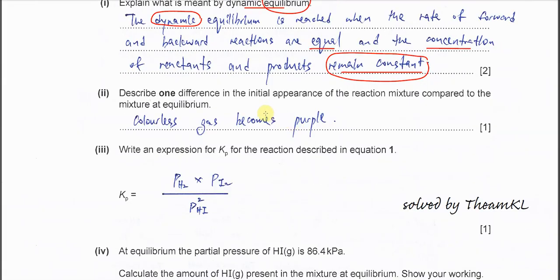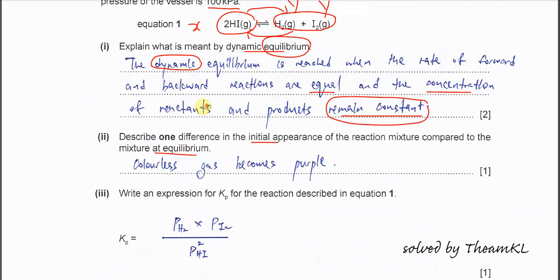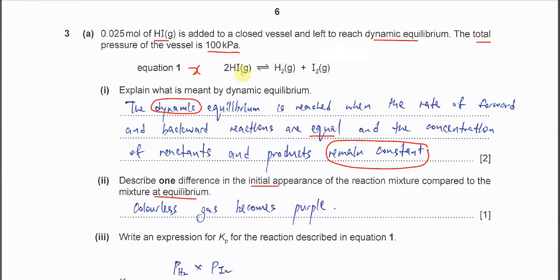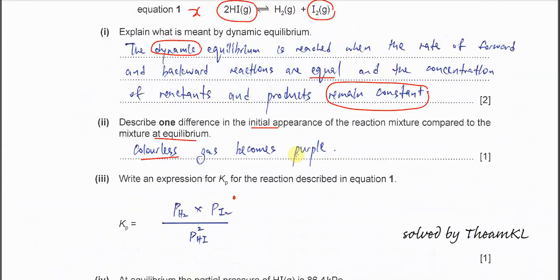Part two - describe one difference in the initial appearance of the reaction compared to the mixture at equilibrium. This is quite easy. Initially HI is colorless. After decomposition, it forms H2 which is colorless and I2 which is purple gas. Iodine gas is purple color, so it's from colorless to purple.